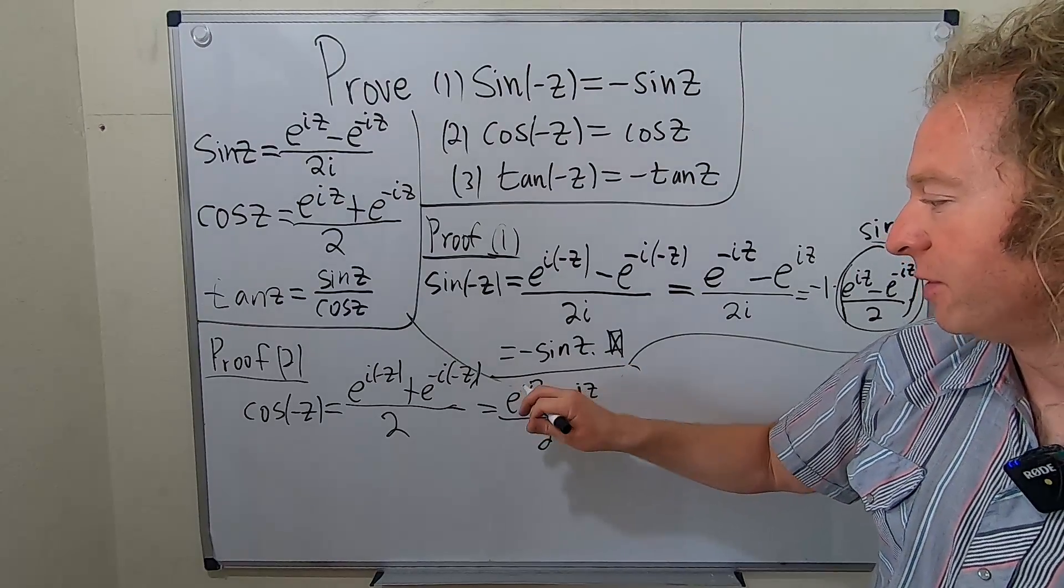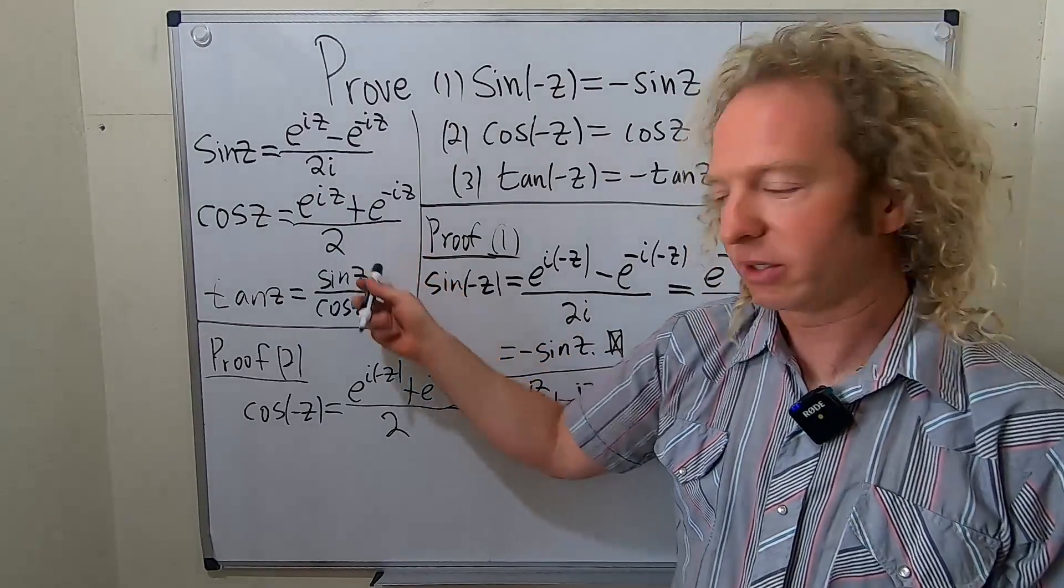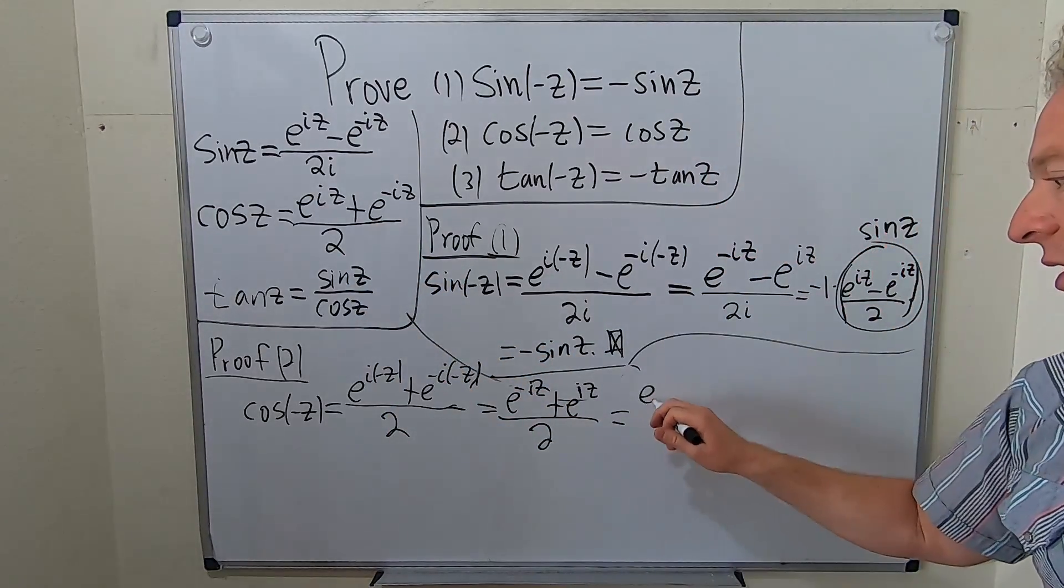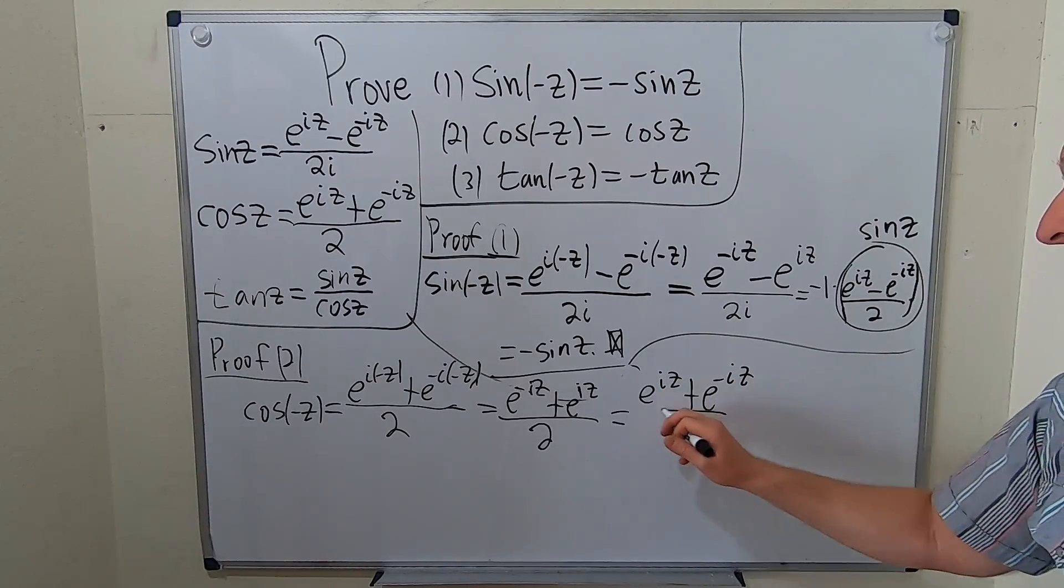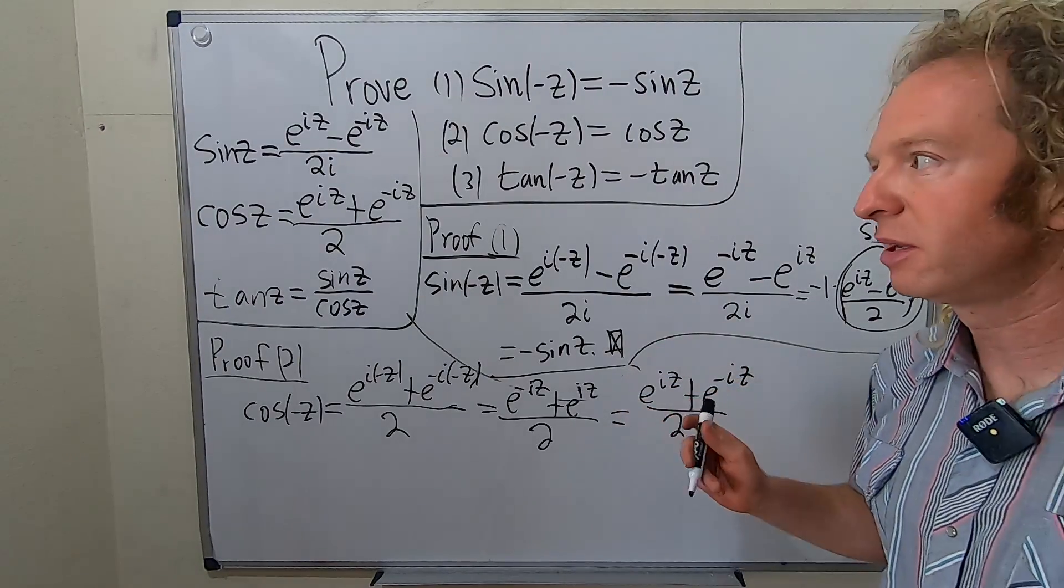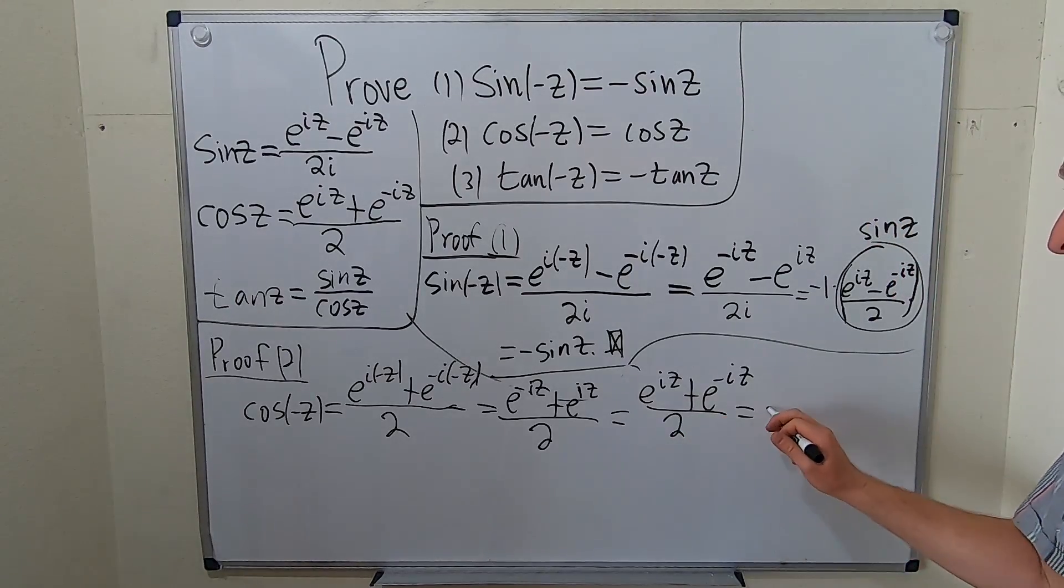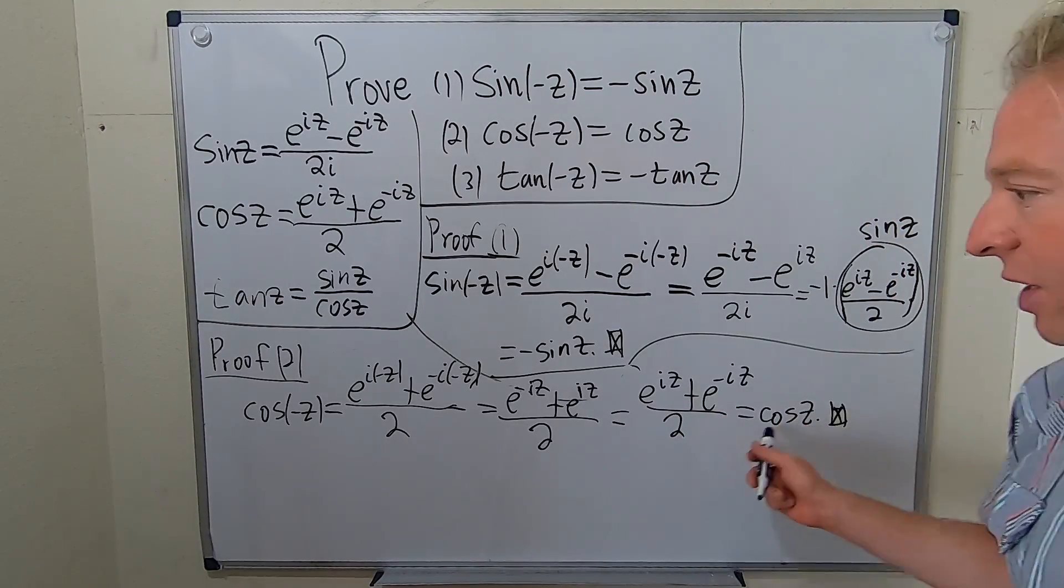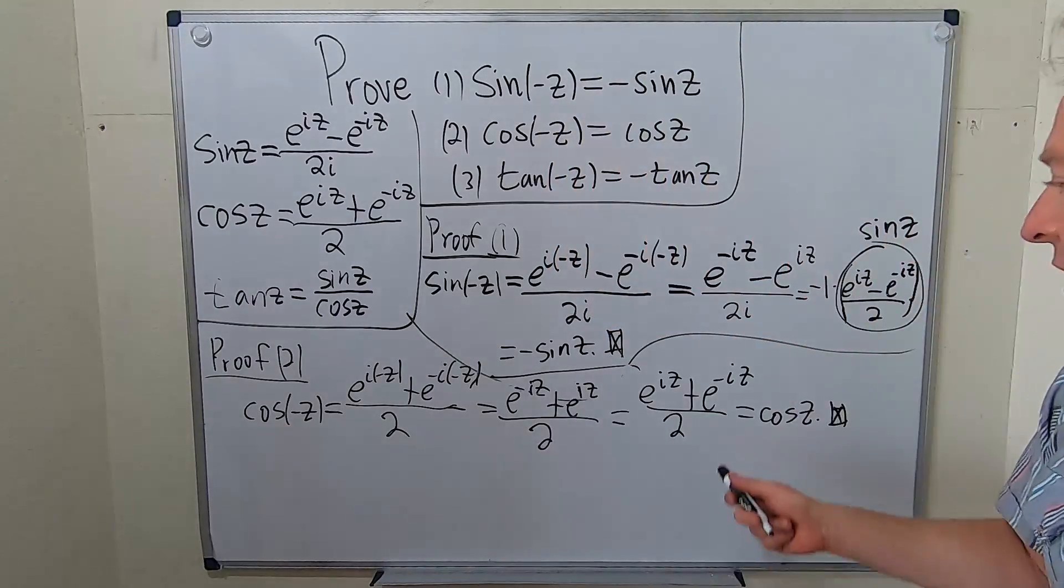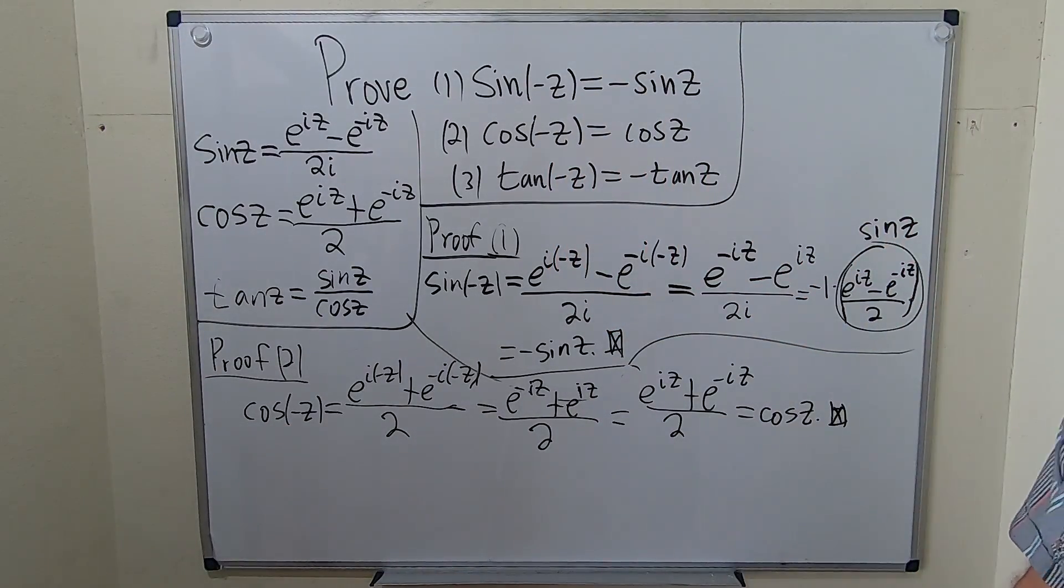The only thing left to do now is maybe rearrange it to make it look like this. So this is equal to e to the iz plus e to the negative iz all over two. And this is cosine z. So the cosine of negative z is equal to the cosine of z. Boom, done.